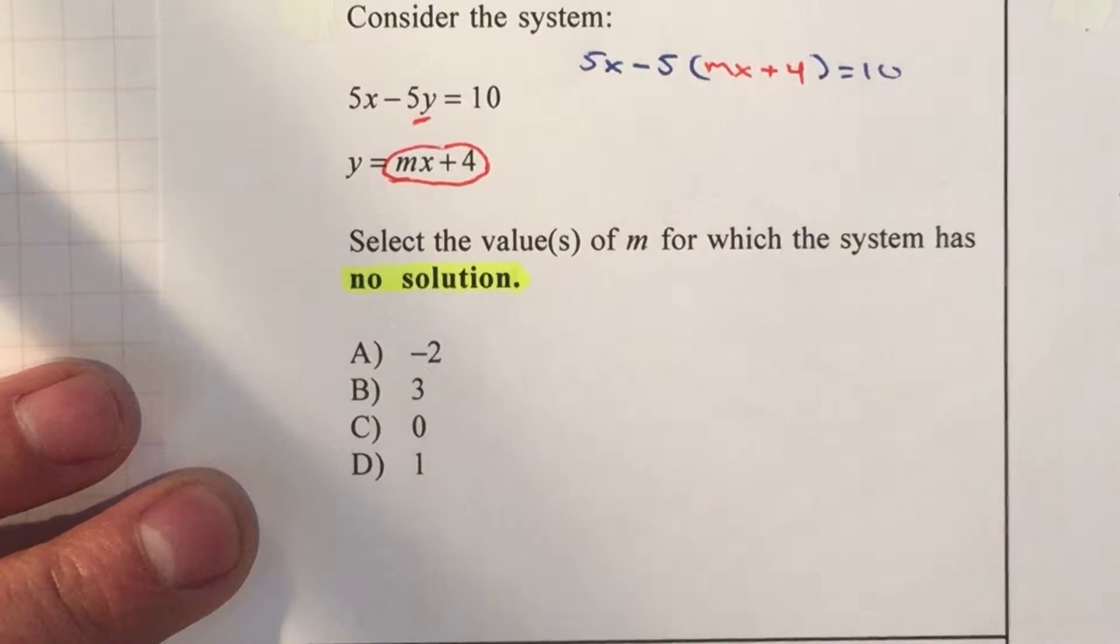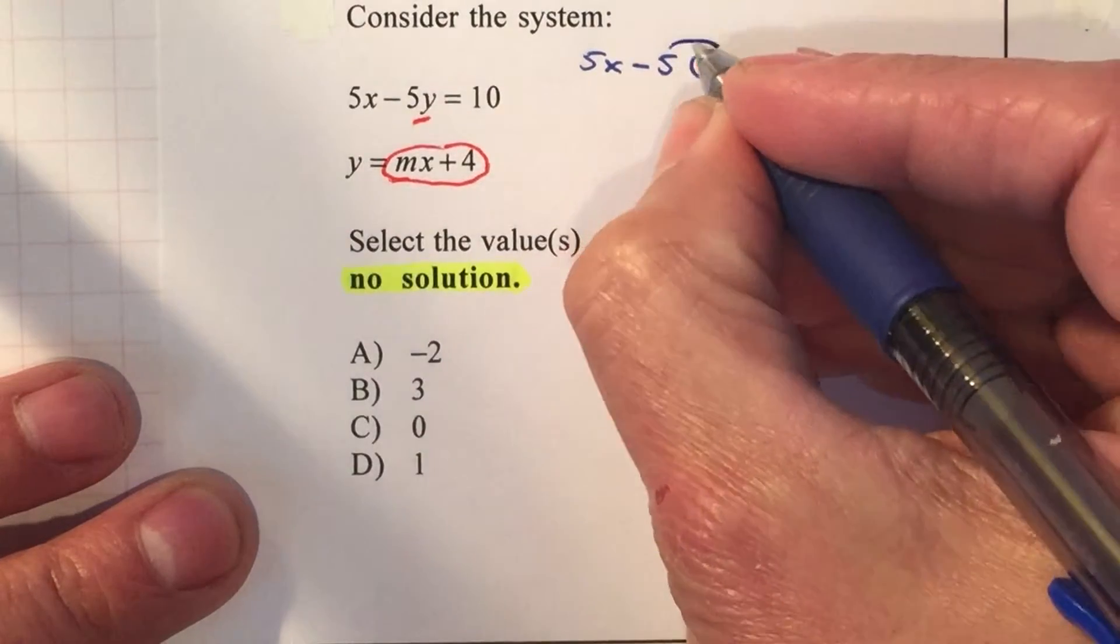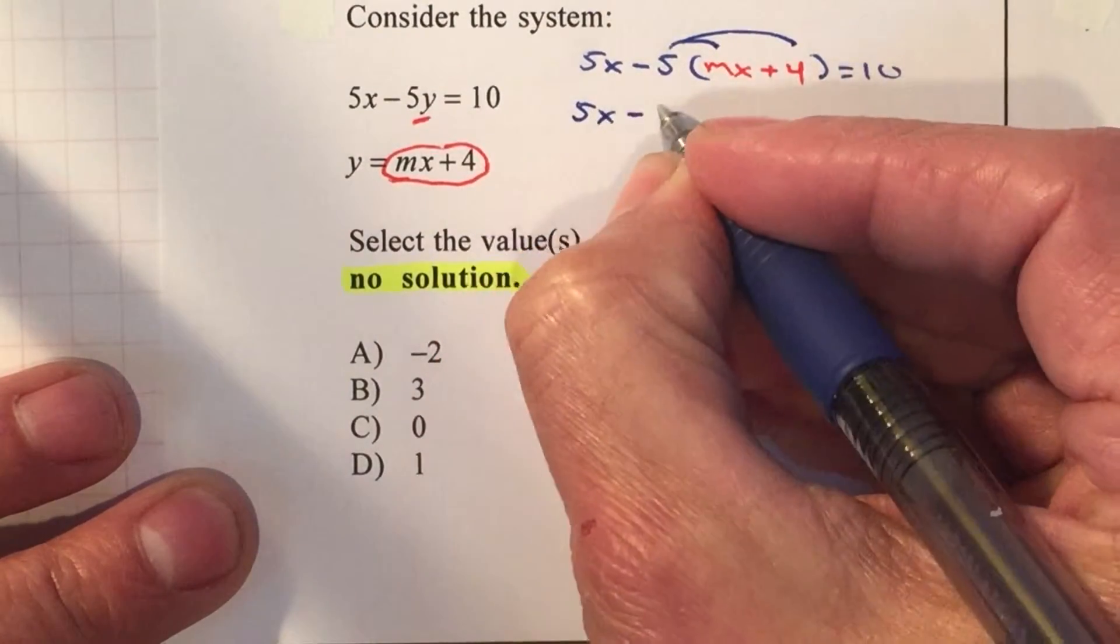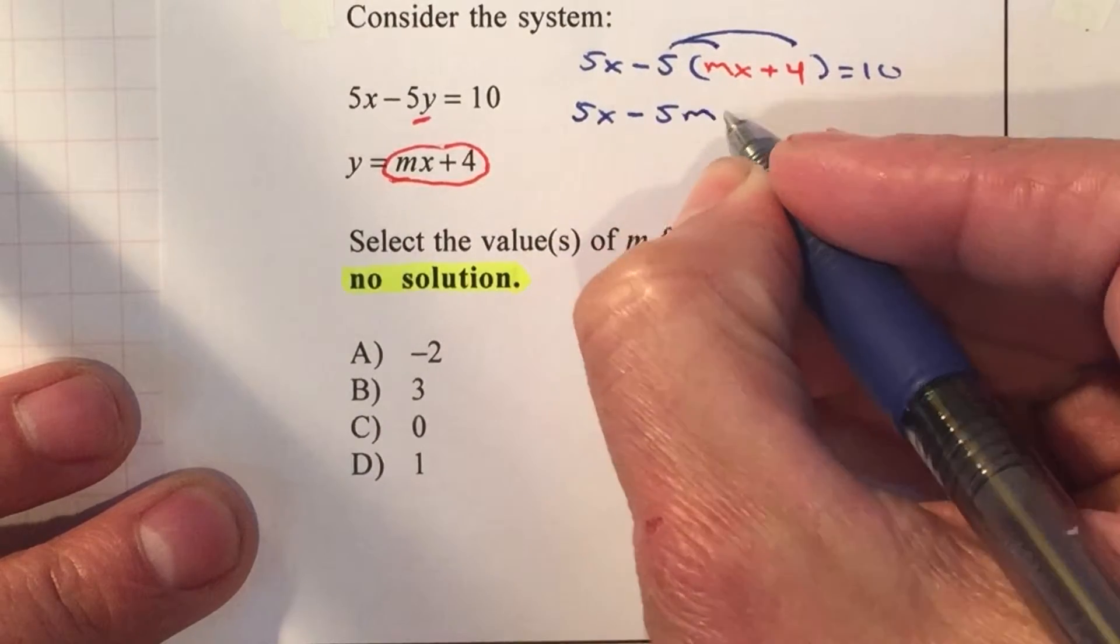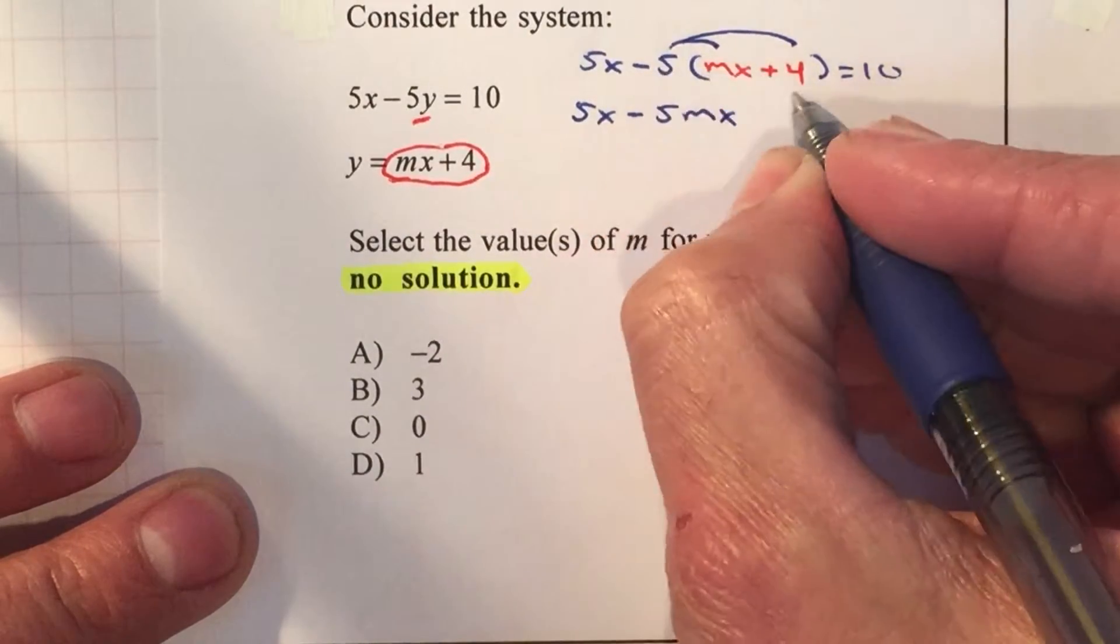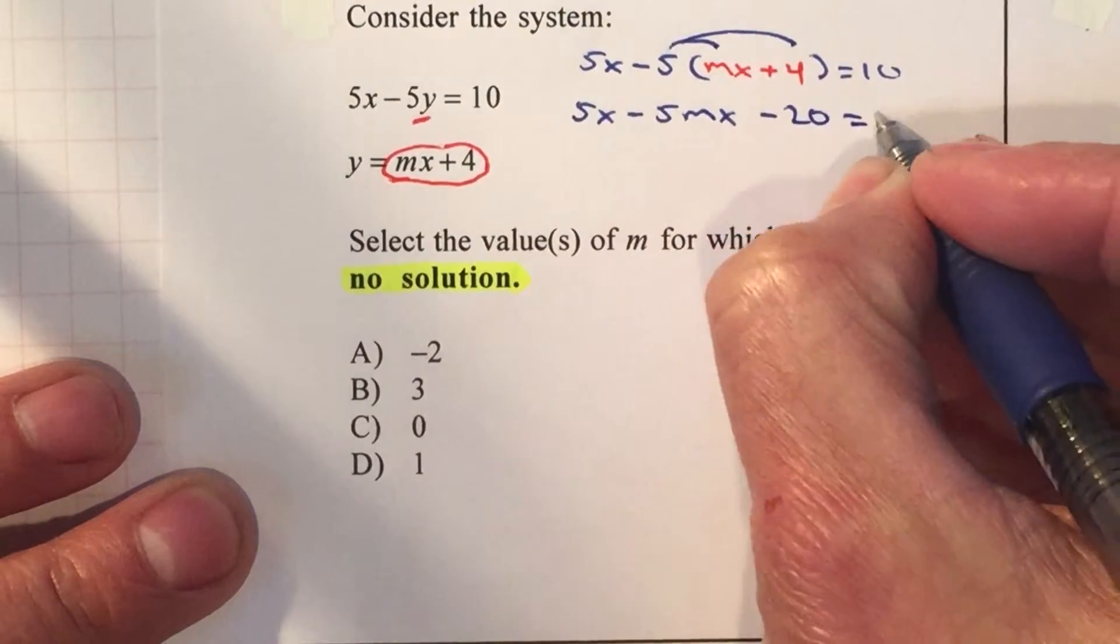Now I'm going to simplify it, distribute the property. So 5x minus 5 times mx will be negative 5mx, minus 20 equals 10.